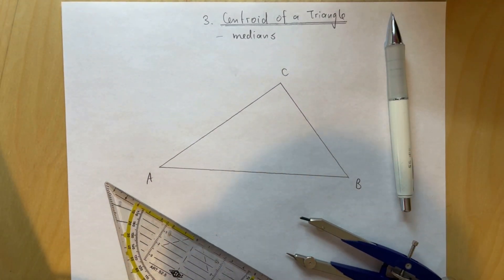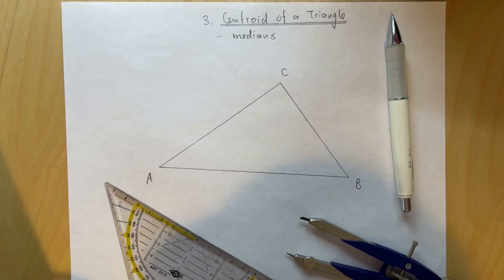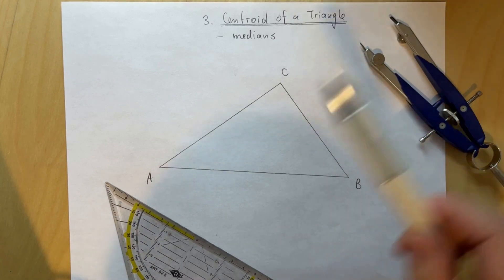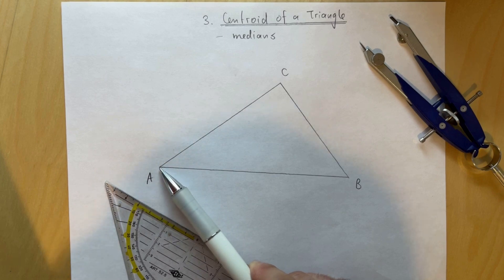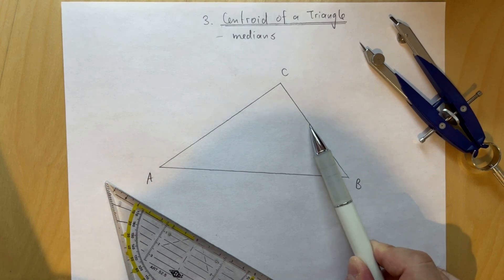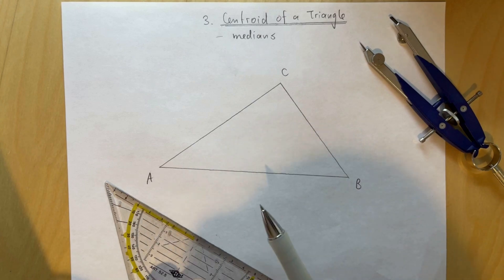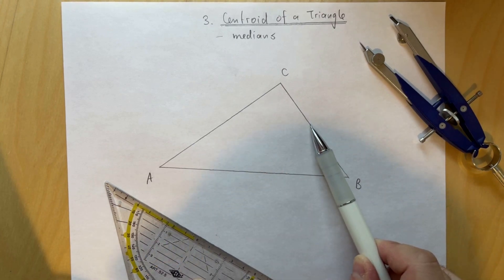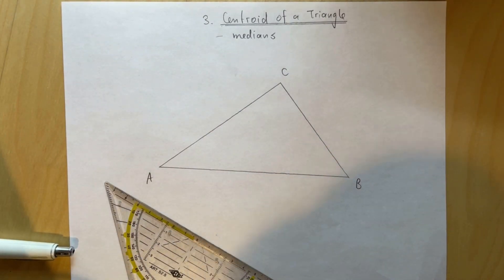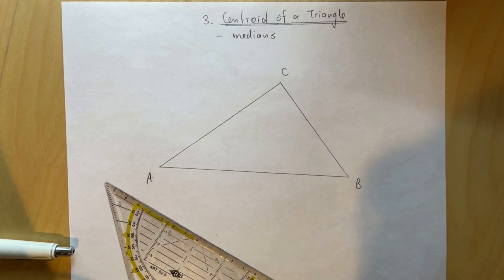Our next construction involves the centroid of a triangle. The centroid can be explained as a center of mass in real life. It is achieved by constructing the medians of the triangle. The median is the segment that connects a vertex of a triangle to the midpoint of the opposite side. We find the midpoint by constructing the perpendicular segment bisectors — so this construction is similar to the circumcenter, but goes a step further by constructing the medians.